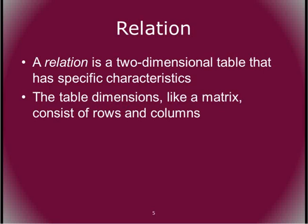A relation is a two-dimensional table with specific characteristics. Table dimensions, like a matrix, consist of rows and columns. An interesting question: can we have a table with no records in it? Absolutely — it's not very useful because it hasn't been populated, but when we first start working with relational databases, none of our tables will be populated. We're creating a structure where we can put records in, with the appropriate tables and fields.